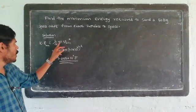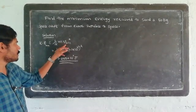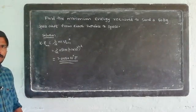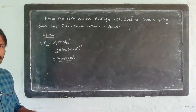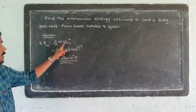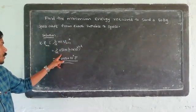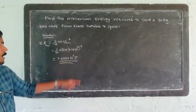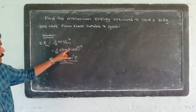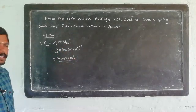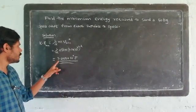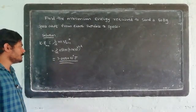The kinetic energy expression is ½mv². The minimum kinetic energy required to send the spacecraft from Earth's surface to space is: KE_min = ½ × 50 × (1.1 × 10⁴)² = 3.025 × 10⁹ J. Here we use escape velocity = 1.1 × 10⁴ m/s.